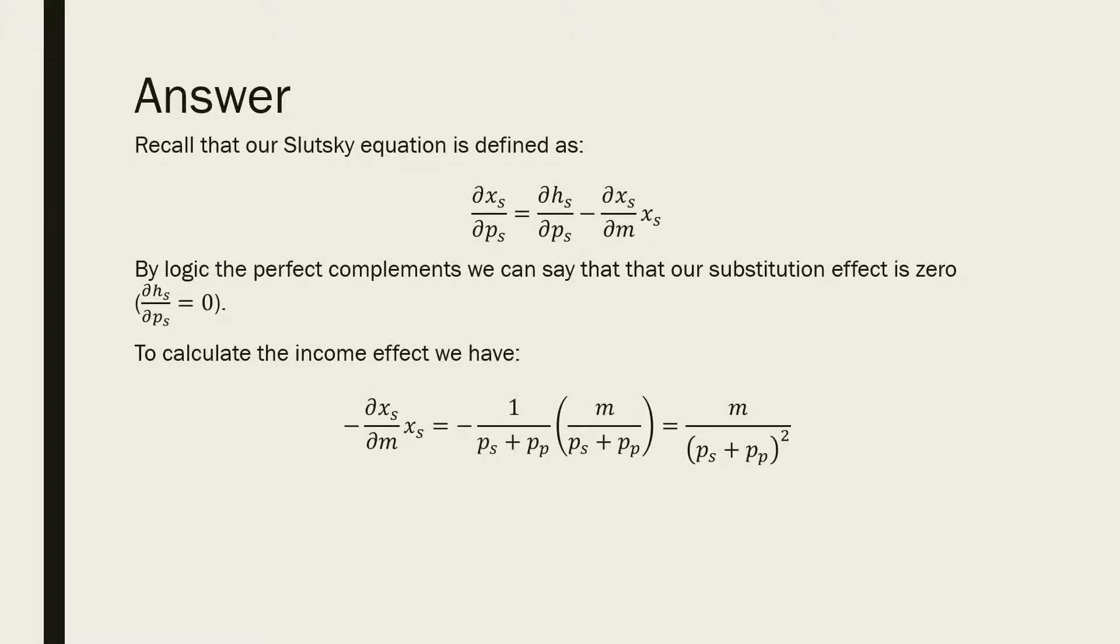To calculate the income effect, we have the negative partial derivative of our Marshallian demand for skis with respect to income times that Marshallian demand for skis, which is equal to negative one over PS plus PP (the price of poles), times our Marshallian demand for skis M over the price of skis plus the price of poles. This equals income M all over the price of skis plus the price of poles squared.